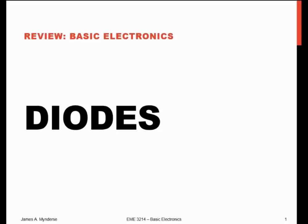Diodes were discovered in the late 1800s. The original diodes were natural materials — you'd have a chunk of crystal, and if you probed it in the right places, you could find spots where electricity would flow one way and not the other. Those are called point contact diodes. From there we went to vacuum tubes, and now they're primarily manufactured from silicon semiconductors, germanium, and things like that.